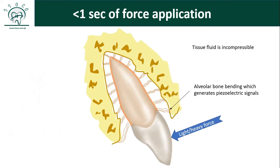Similarly, when force is applied for a second, the tooth moves but with bending of the alveolar bone, and there is no change in shape, size, or orientation of the PDL fibers, because tissue fluid is still present and PDL is still a fluid-filled chamber. You can even feel this: if you press an upper central incisor lingually, you immediately feel some interference — the tooth is moving along with the alveolar bone. This is nature's design so that during mastication, the incompressible tissue fluid prevents excessive tooth movement.